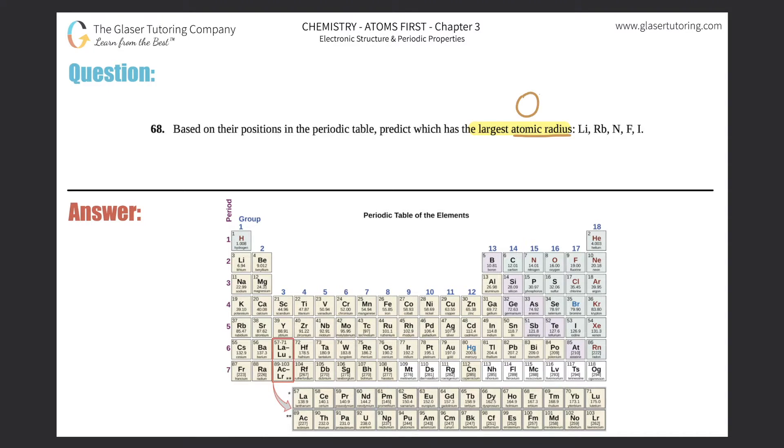Here are the two trends. If you're going across a period from left to right, your atomic radius will decrease, meaning you start with big atoms and work your way down to getting smaller and smaller. If I go across a period from rubidium all the way to xenon, rubidium would be super large as compared to little itty bitty xenon.